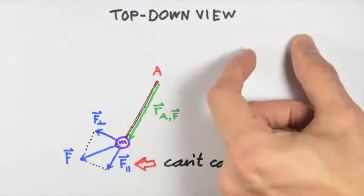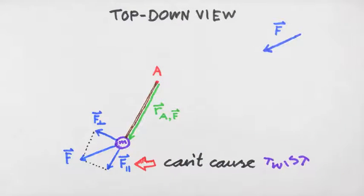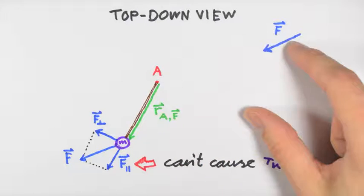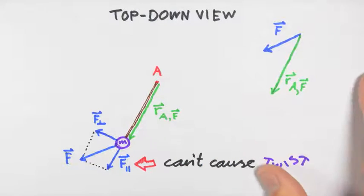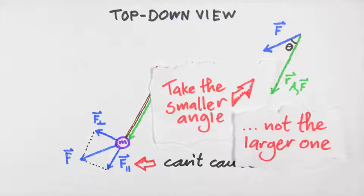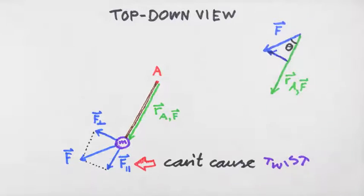So the perpendicular component of F is the only component of F that can apply a twist. We can find the magnitude of this perpendicular component of F using trigonometry. If we know the angle between the vectors F and r sub a F—let's call that angle theta—then the magnitude of the perpendicular component of F is equal to the magnitude of F times the sine of the angle theta.